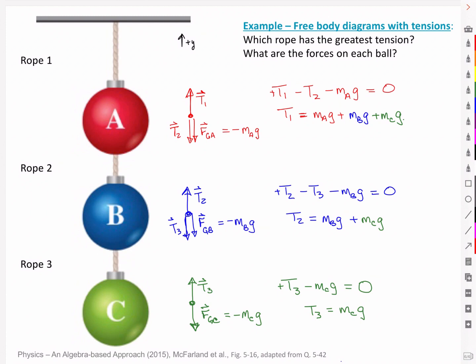So if I answer the questions up above, which rope has the greatest tension? The top one. It's supporting all three weights. What are the forces on each ball? The net force on each ball is equal to zero because it's hanging in equilibrium. And the free body diagram shows us the net forces and how those come about.